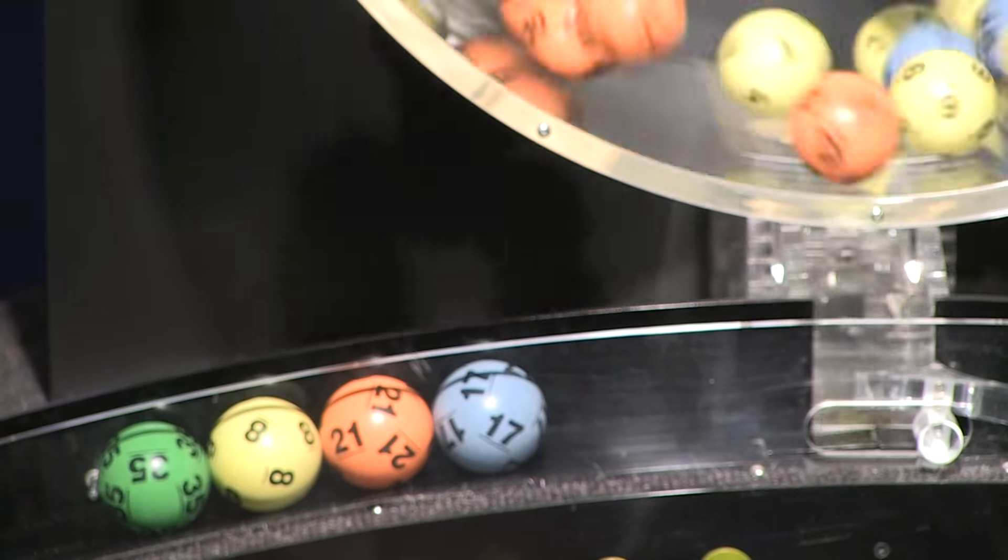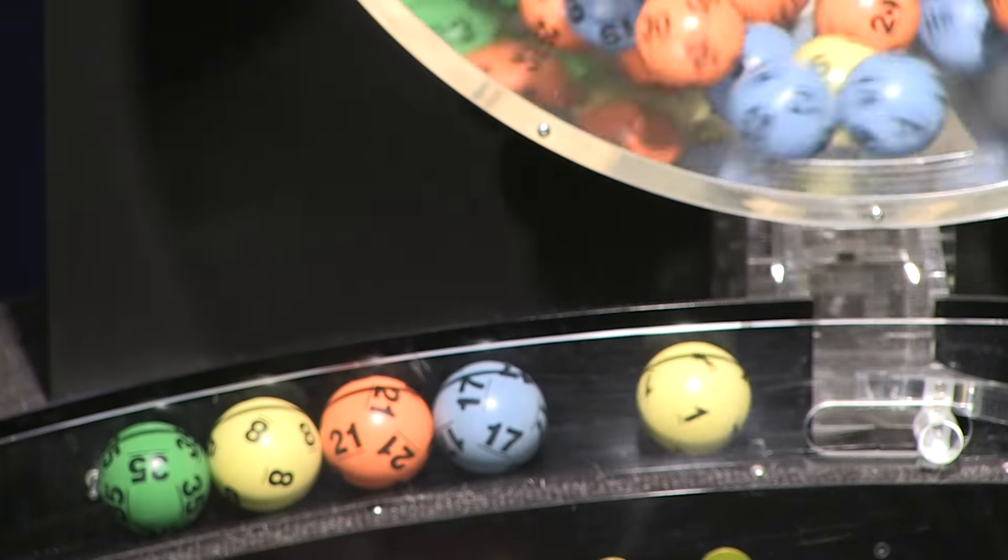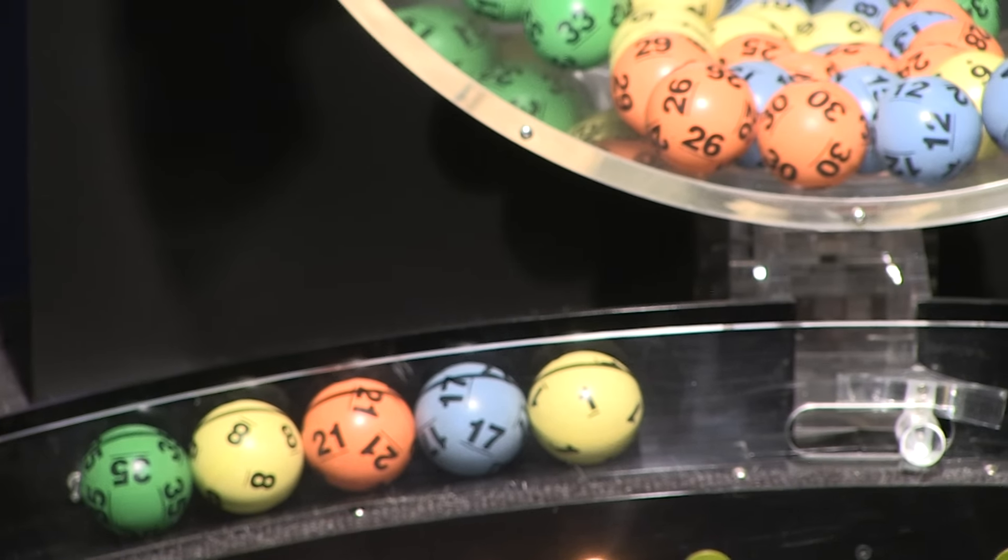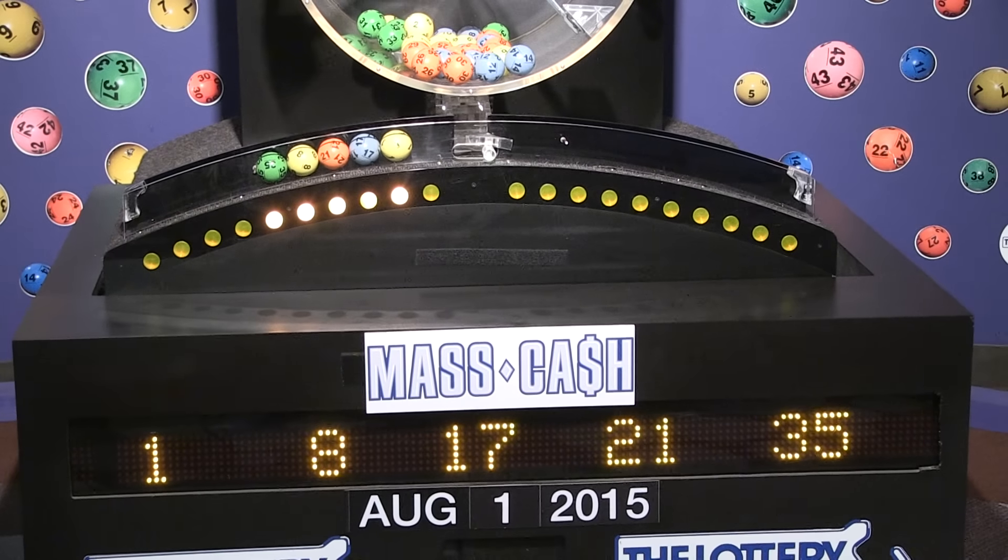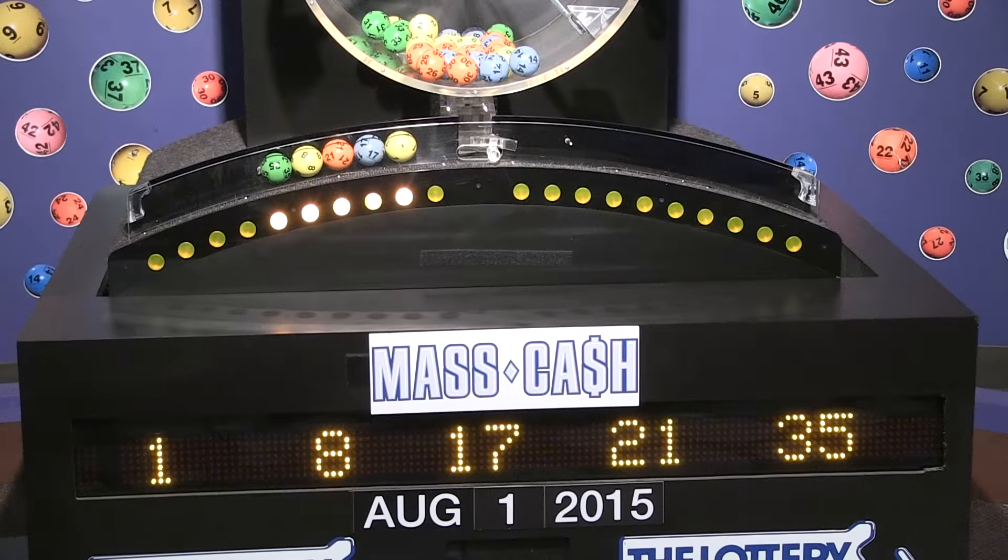Here comes 17, and finally, 1. Once again, the winning Mass Cash numbers for Saturday, August 1st are 1, 8, 17, 21, and 35.